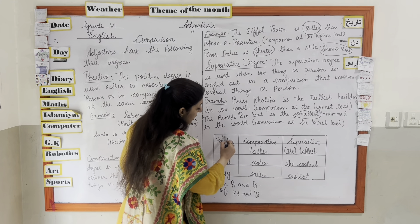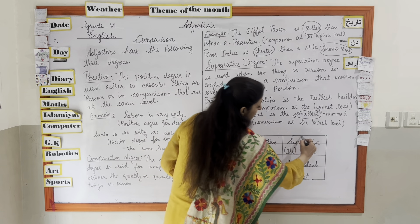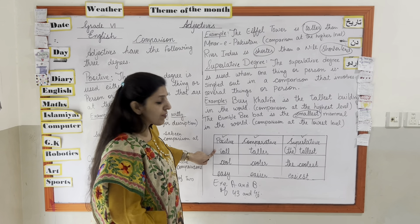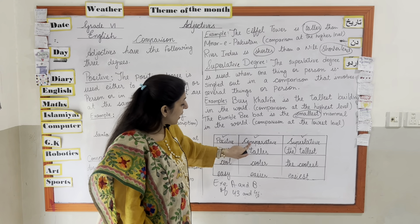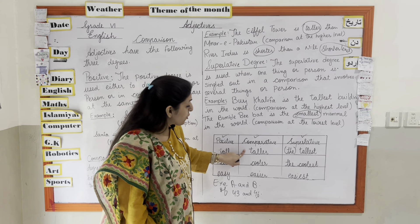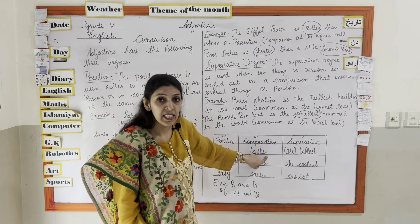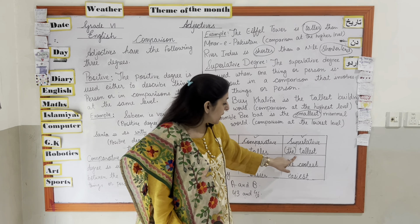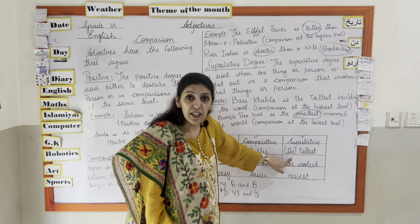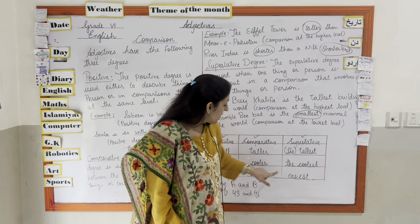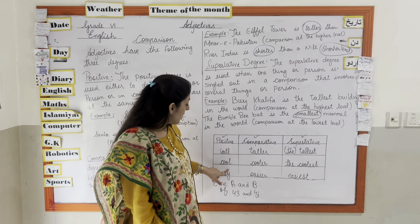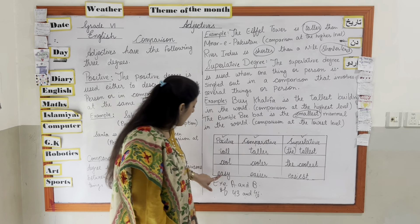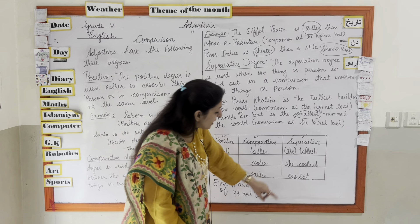Here is a summary chart: the positive degree is 'tall,' the comparative degree is 'taller' — we add '-er' — and the superlative degree is 'the tallest' — we add 'the' and '-est.' Similarly: cool, cooler, the coolest; and easy, easier, the easiest.